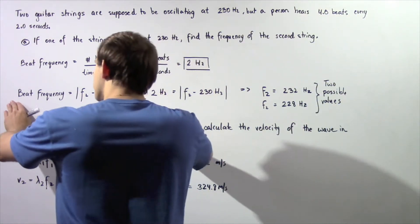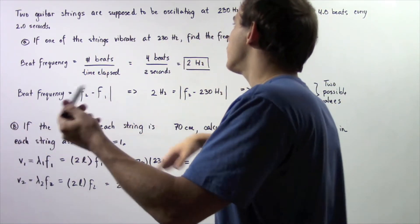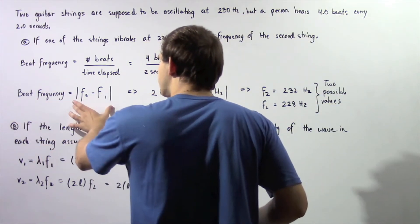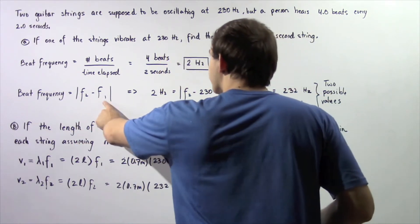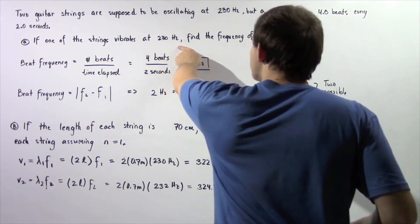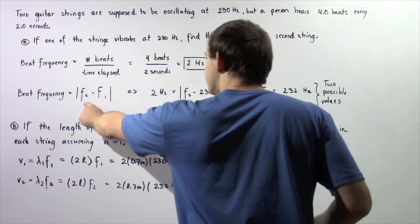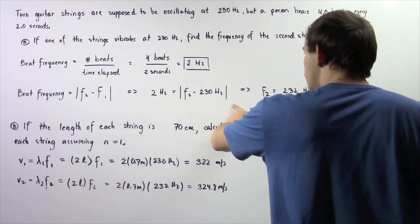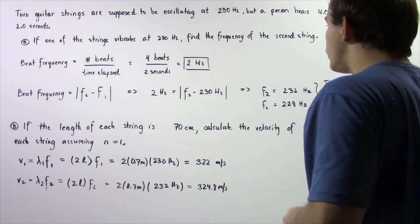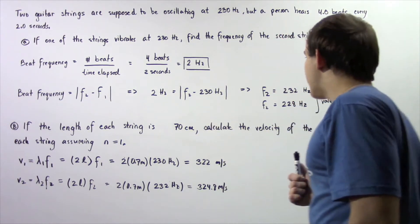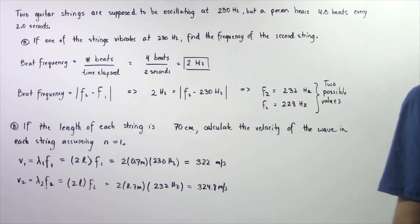Now we want to use this equation to calculate the frequency of one of the guitar strings. The beat frequency is equal to the absolute value of F2 minus F1, where F1 is the frequency of string number one. So two Hertz equals the absolute value of F2 minus 230 Hertz, and we find that F2 is either 232 Hertz or 228 Hertz.